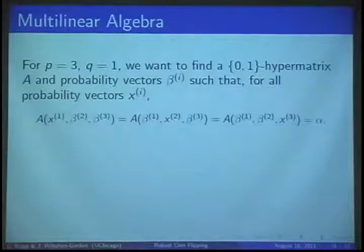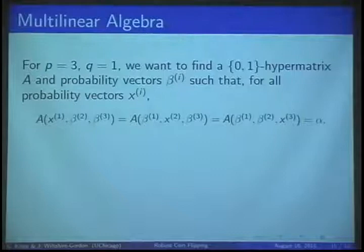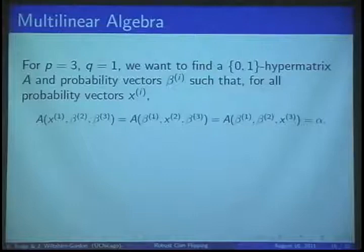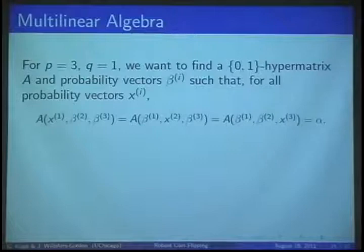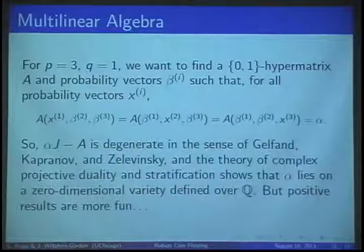If we have, say, one dishonest party, we must be prepared to handle any probability space that party throws our way. The honest party spaces must even things out. It comes down to multilinear algebra. In this notation, A represents the hyper matrix you get by replacing nickel heads with ones and nickel tails with zeros. This setup is the beginning of an algebraic geometry proof that alpha must be an algebraic number.